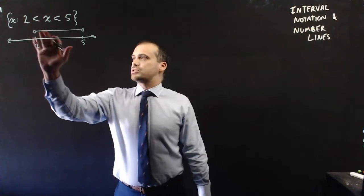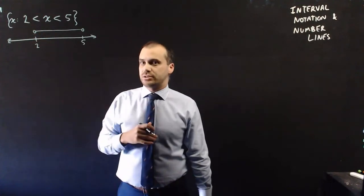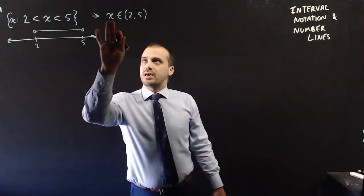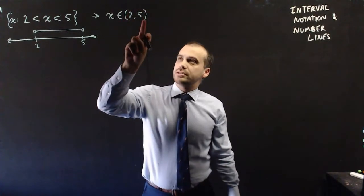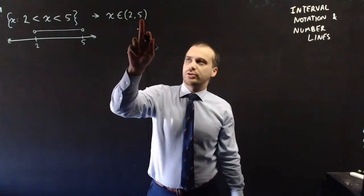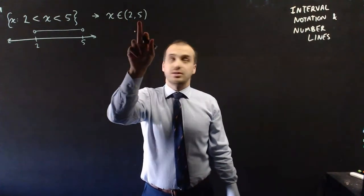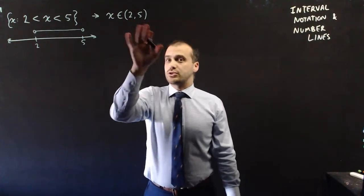Now there is another way to show that exact same information. Another way to write that is that x is in the set 2 to 5. Now these rounded brackets mean the same as don't include 2 and don't include 5, but this notation, this interval notation, says include everything between 2 and 5.